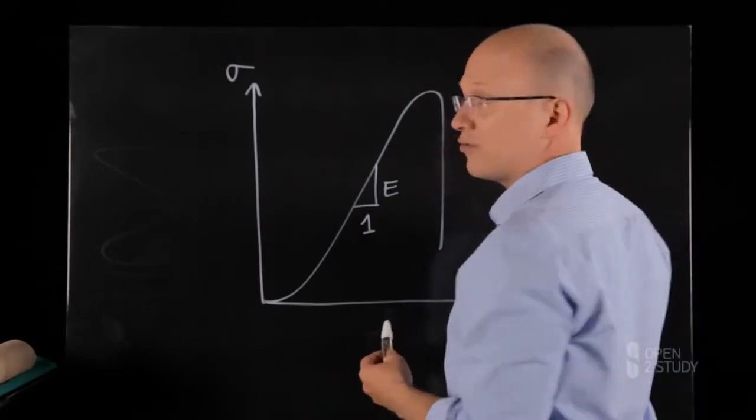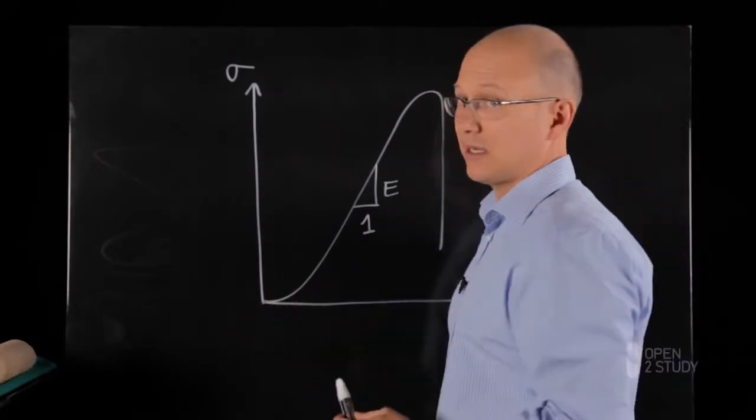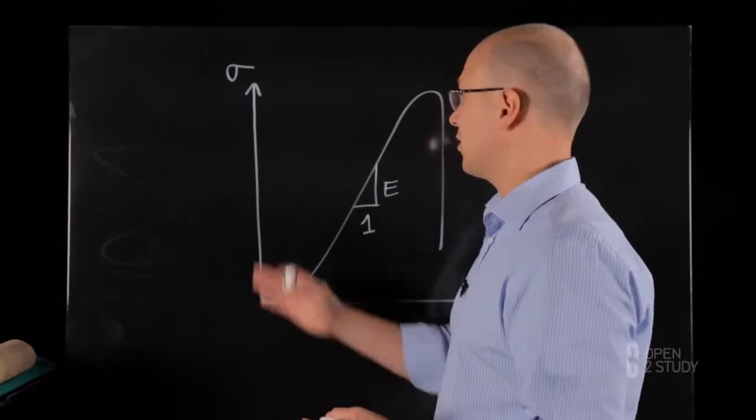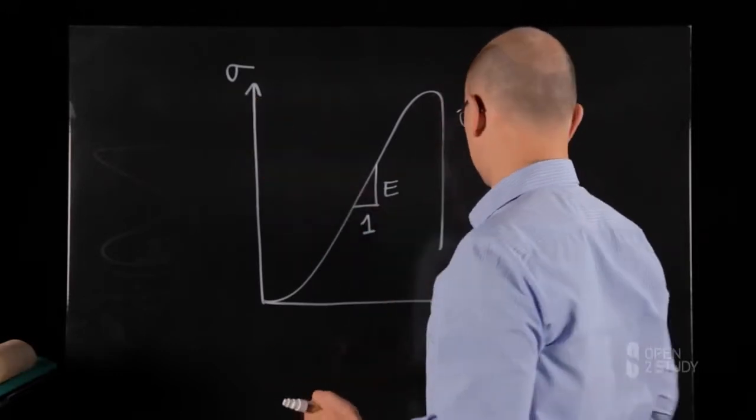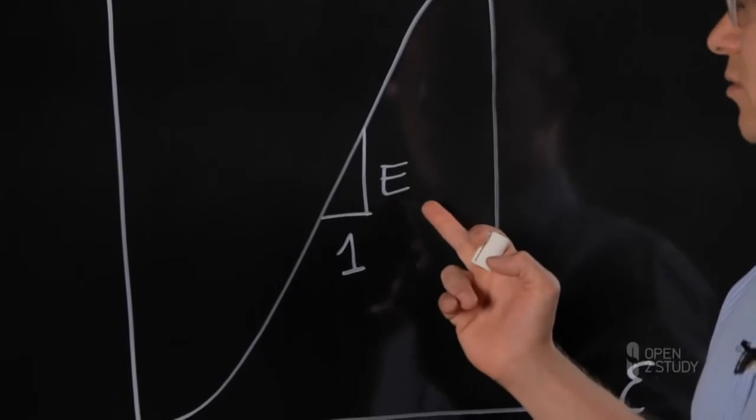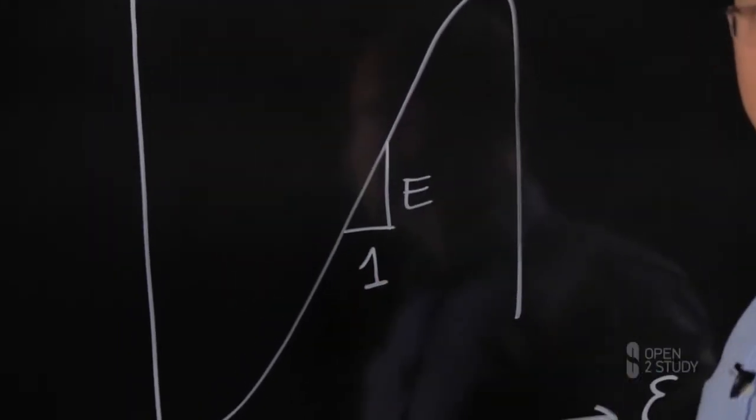So when it comes to engineering, this non-linear part is typically neglected and we simply consider that stress equals E times strain. E is a very critical information to relate stress and strain.